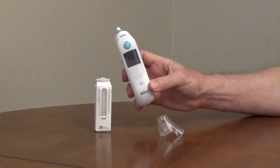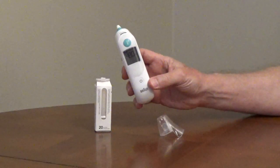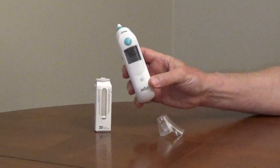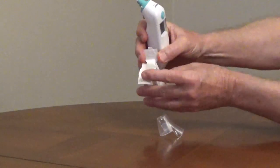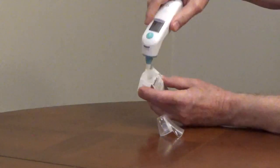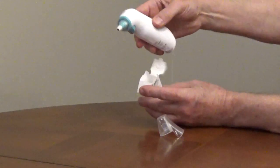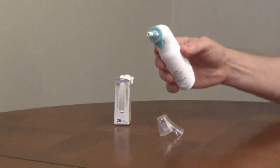It will perform a self-check and display the last temperature taken. Attach a new lens cover by pushing the probe into the lens filter box and pulling it out. The thermometer won't work if there isn't a lens filter attached to the probe.